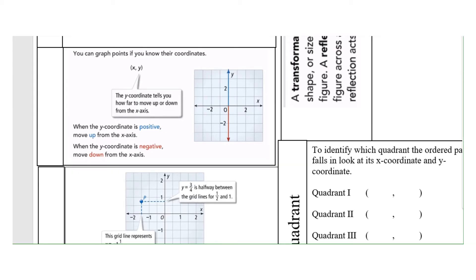The y-coordinate tells you how far to move up or down from the x-axis. When the y-coordinate is positive, you start at the origin (0, 0) and move above the x-axis — moving up is a positive situation. If it's negative, you move down. Below the x-axis along the y-axis is negative, and above is positive. The y-coordinate tells you how far to move up or down along the y-axis.